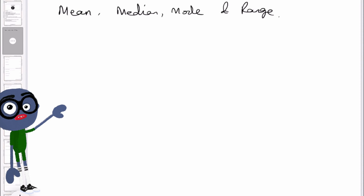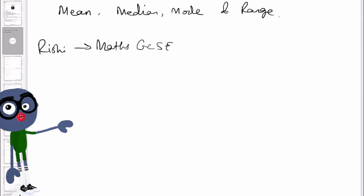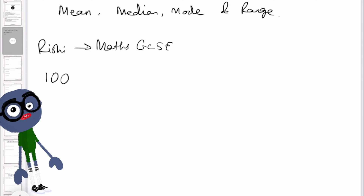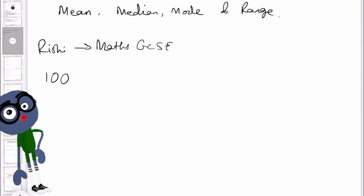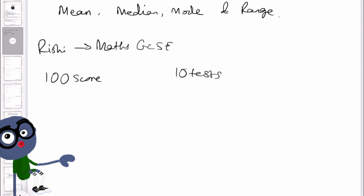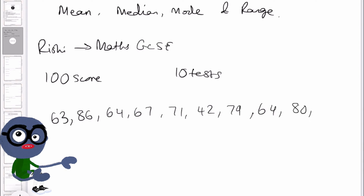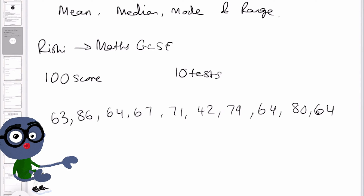Rishi is preparing for his maths GCSE exam. Each paper is marked out of 100 and he attempts 10 tests. Let's go ahead and write down his scores, and then we can use these values to calculate the mean, median, and mode to find out more information about his results.